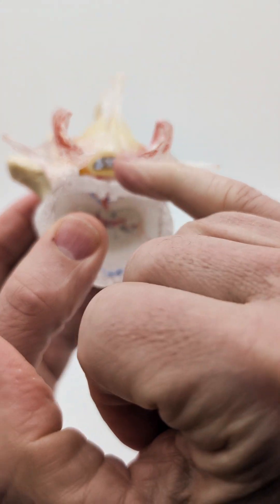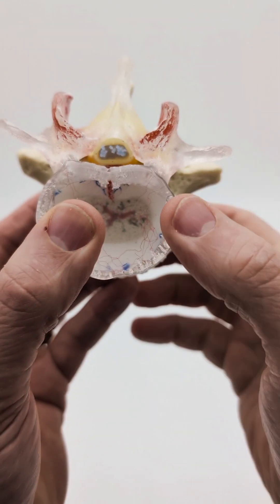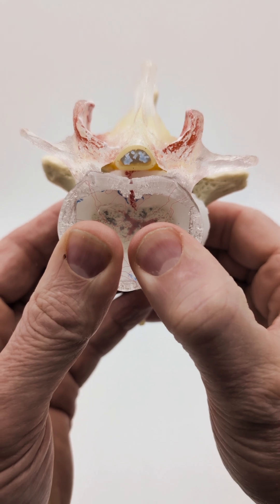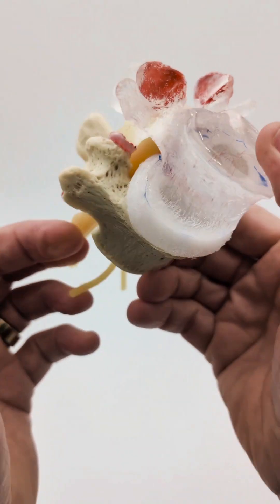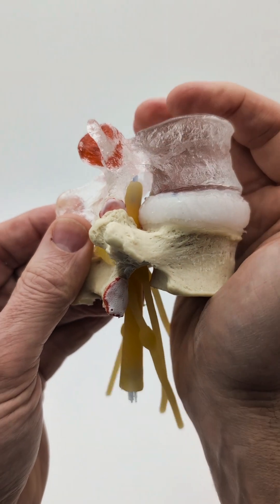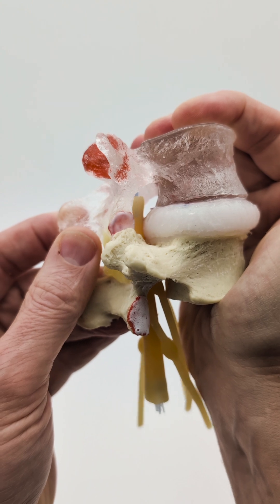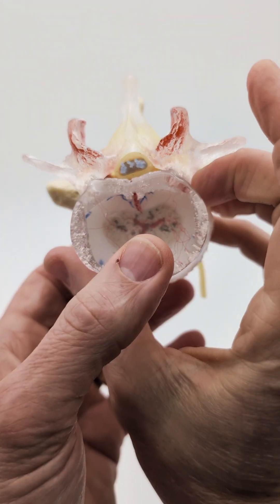In particular, the thecal sac, the dura mater, and then the rootlets, having an impact on the CSF flow and compression on the nerves.